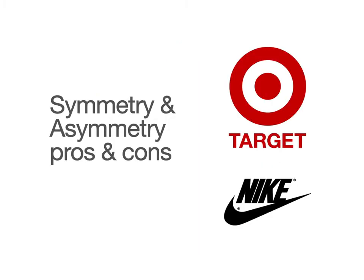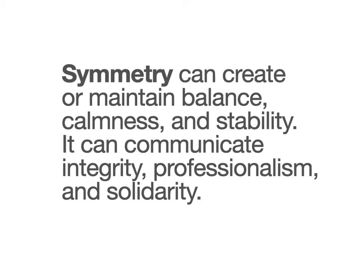Symmetry and asymmetry each have pros and cons, and certain characteristics have come to be connected with one or the other. Symmetry is often connected with stability and harmony — a lot of corporate logos tend to be symmetrical because it gives a sense of stability. On the flip side, symmetry can also be considered predictable and boring. Nike is a great example of a big-time asymmetrical logo. Symmetry can create balance, calmness, and stability; it can communicate integrity, professionalism, and solidarity.